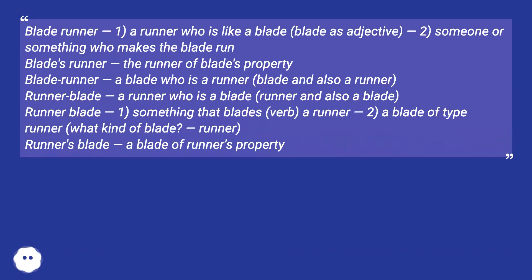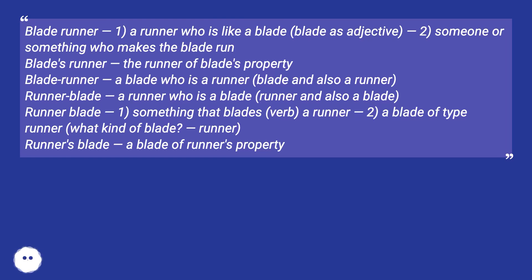Blade Runner: 1. A runner who is like a blade — blade as adjective. 2. Someone or something who makes the blade run — blade's runner, the runner of blade's property. Blade Runner: a blade who is a runner, a blade and also a runner. Runner Blade: something that blades — a verb — a runner. 2. A blade of type runner. What kind of blade? Runner. Runner's blade: a blade of runner's property.